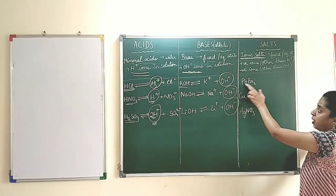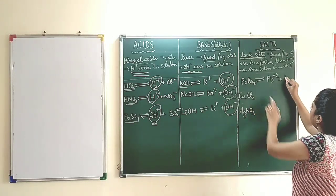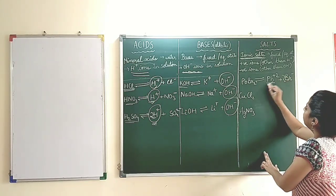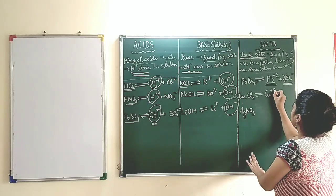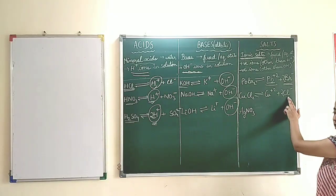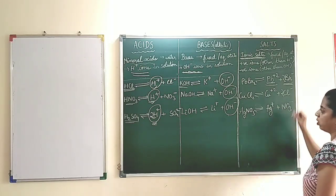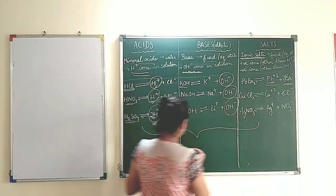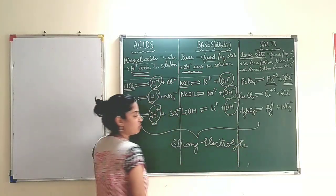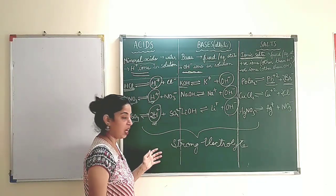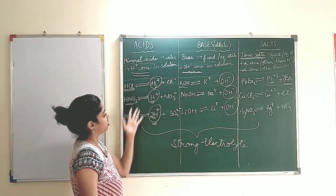Now coming to salts — lead bromide when it dissociates gives Pb2+ and 2Br- ions, so one positive ion and two negative ions. Copper chloride gives Cu2+ and 2Cl-. Similarly in silver nitrate, silver is +1 and NO3- is -1. All three of them are strong electrolytes because they dissociate completely to give ions. Whenever you are asked to write examples of strong electrolyte bases, acids, or salts, you will write these examples.